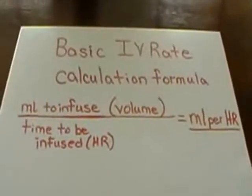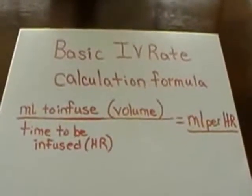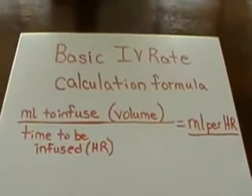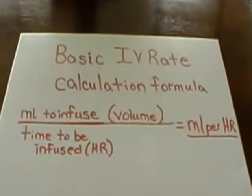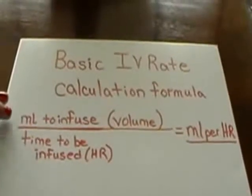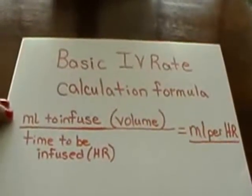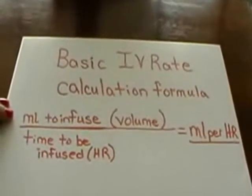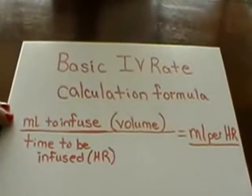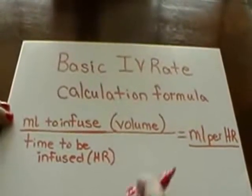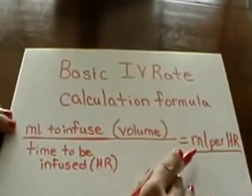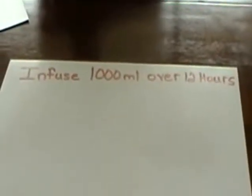The first type of problem that we're going to work is a basic IV rate calculation formula. With this type of problem, you always put milliliters to infuse, your volume, over time to be infused, your hours. This will equal milliliters per hour. We're going to work a problem so that I can show you how to do a milliliters per hour IV problem.